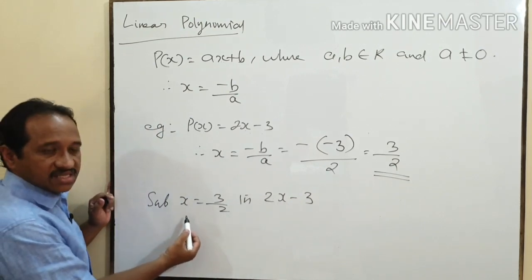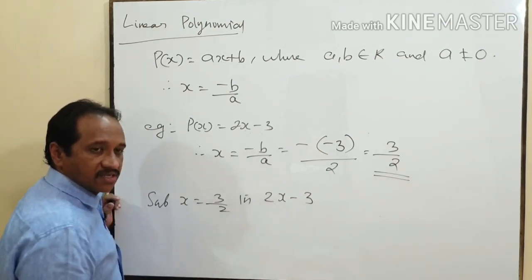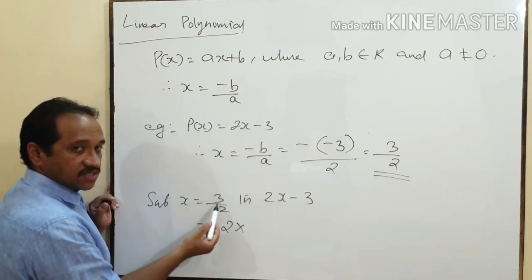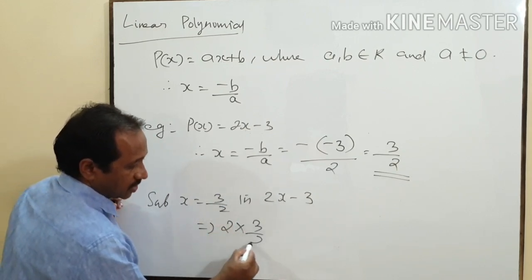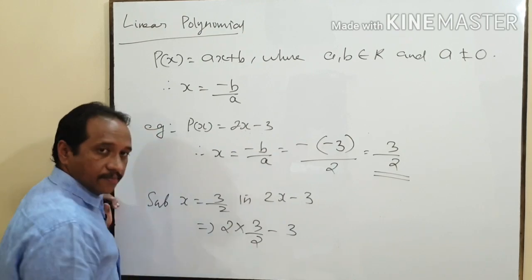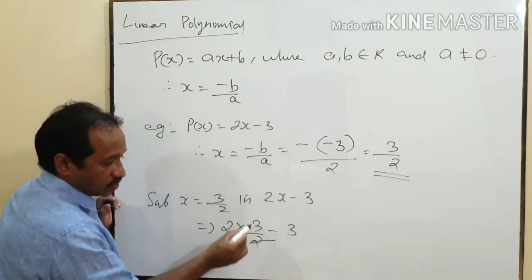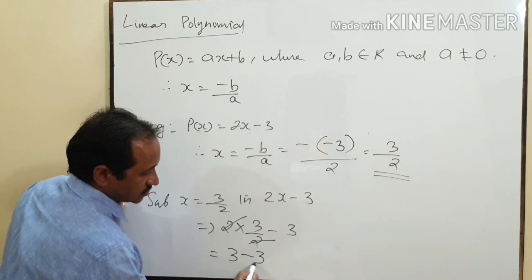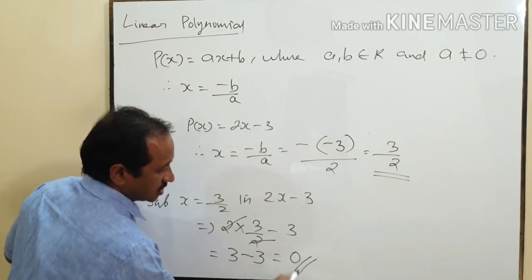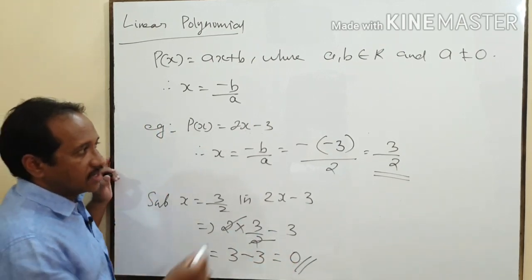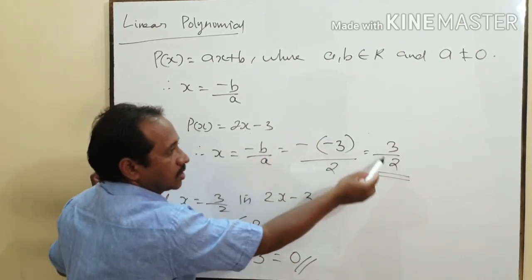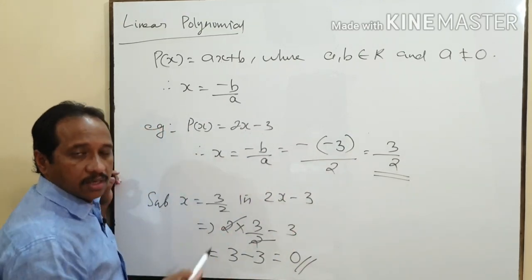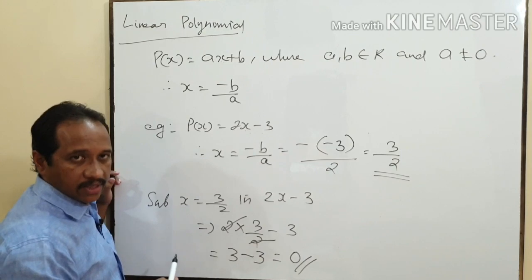Substituting x = 3/2 in 2x − 3 gives 2 × (3/2) − 3. The 2 and 2 get cancelled, giving 3 − 3 = 0. That is why x = 3/2 is called the zero of the polynomial or root of the polynomial.